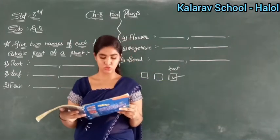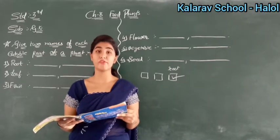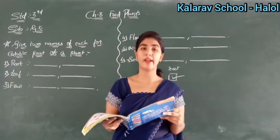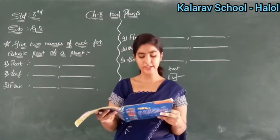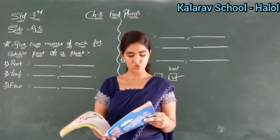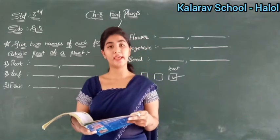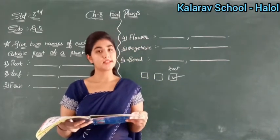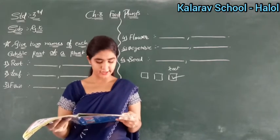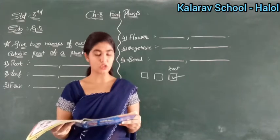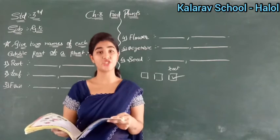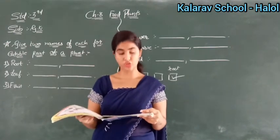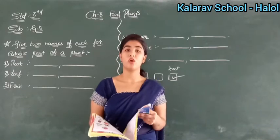Then it is cucumber. Cucumber is also a vegetable here, but the option given is fruit, so you will put a tick mark on fruit. Then it is potato. Which part of potato do we eat? It is stem. So you will put a tick mark on stem. Then it is brinjal. Which part of brinjal do we eat? It is a vegetable, but here vegetable is not given to you, so you will put a tick mark on fruit.